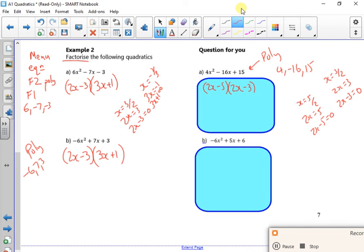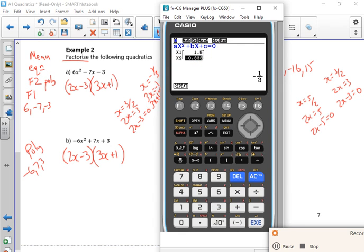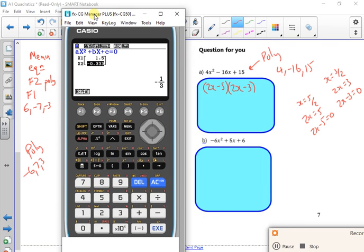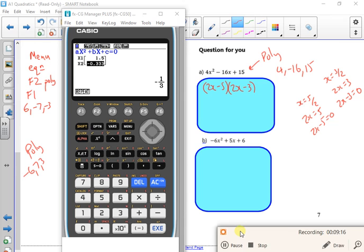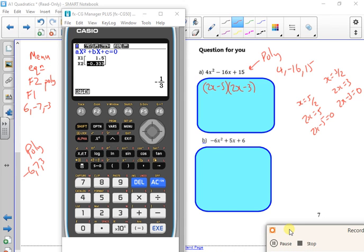There's another one here to do. Have a go at that one and I'll do it now. So if I put in minus 6, 5, 6. I get 3 over 2. So that's 2x minus 3. And 2 thirds. So 3x plus 2.